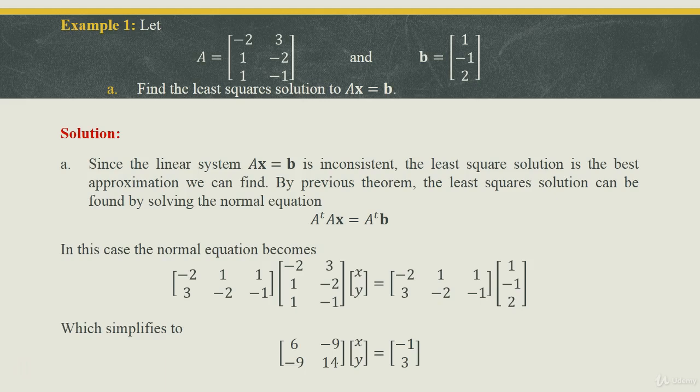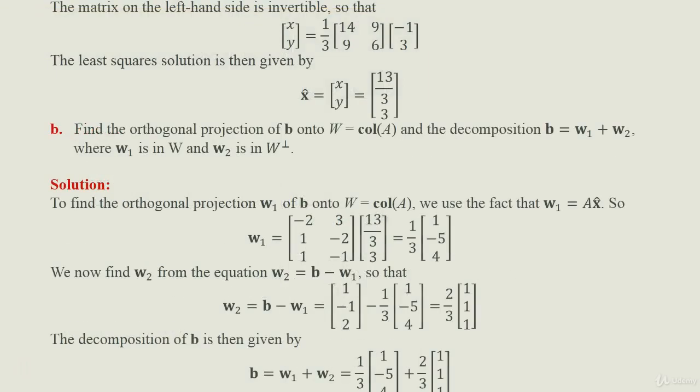In this case the normal equation becomes: the matrix [−2, 1, 1; 3, −2, −1] (which is A^T) times A times [x; y] equals A^T b, which simplifies to the 2×2 matrix [6, −9; −9, 14] times [x; y] = [−1; 3]. The matrix on the left hand side is invertible, so [x; y] = (1/3) [14, 9; 9, 6] times [−1; 3].